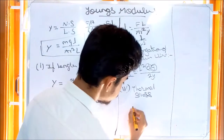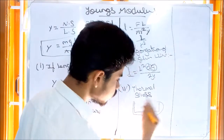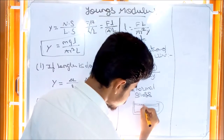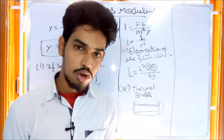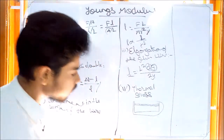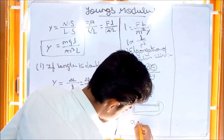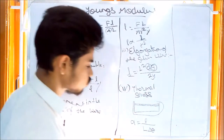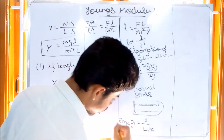You can also use thermal stress. For thermal stress, if a rod is heated it will expand. The thermal expansion formula uses alpha, where alpha is equal to change in length divided by L, multiplied by the change in temperature delta theta. This gives us the thermal expansion.